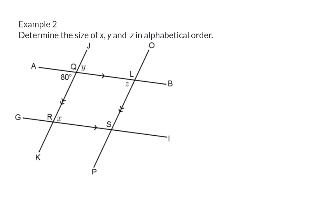Example 2: Determine the size of X, Y and Z in alphabetical order. This means I have to start at X. In the sketch we have two pairs of parallel lines. Firstly we have JK and OP and then we have AB parallel to GI.